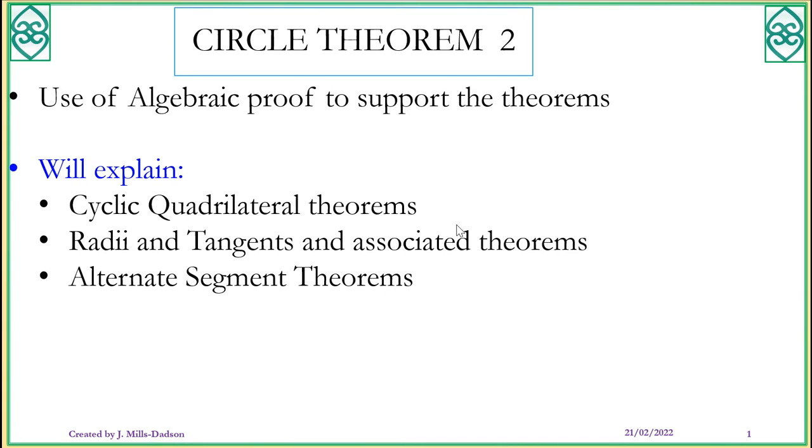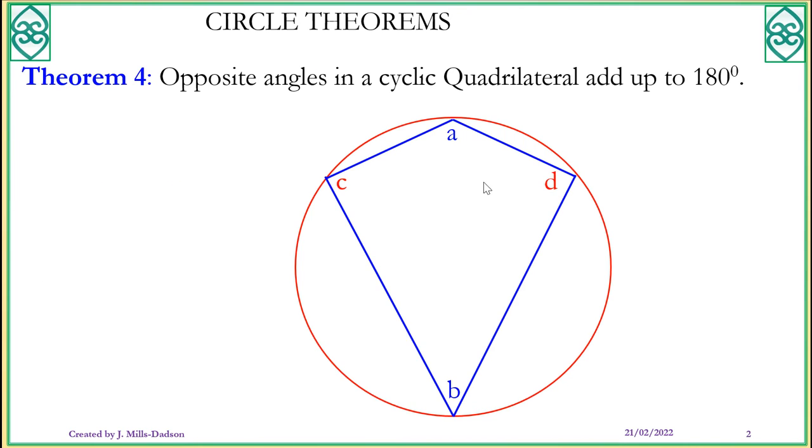This is lesson 2 on circle theorems and I suggest if you haven't watched circle theorem lesson 1, you go back to watch that because I will be making reference to the previous theorems that we've gone through. So in lesson 2, I'll be talking to you about cyclic quadrilateral theorems, radi-tangent associated theorems, and alternate segment theorems. And where possible, I will use algebraic proof to support the theorems as well. So we continue from where we left off in lesson 1.